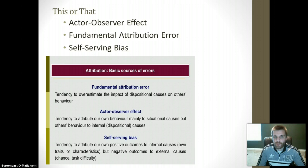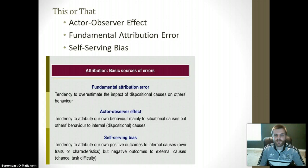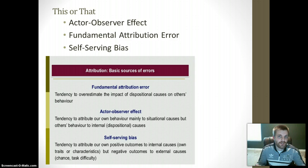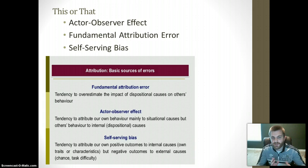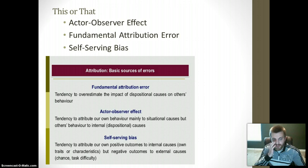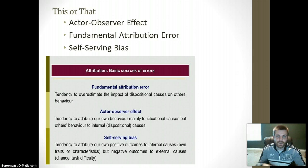You also have the actor-observer effect, the fundamental attribution error, and the self-serving bias. The fundamental attribution error is the tendency to overestimate the impact of dispositional causes on others' behavior — ascribing what is happening to someone's personality rather than the situation or environment. The actor-observer effect is the tendency to attribute your own behaviors mainly to environmental or situational causes rather than internal personality traits. The self-serving bias is when you attribute positive outcomes to internal attributions like personality or abilities, but negative outcomes to external causes like task difficulty, chance, or the environment.